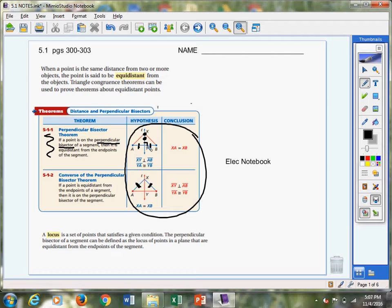The converse of that is, hey, if I already know that a point's equidistant from the endpoints of the segment, then line L, whatever that line name is, in this case, in the picture, it's line L, has to be the perpendicular bisector of the segment. That point lies on that bisector.